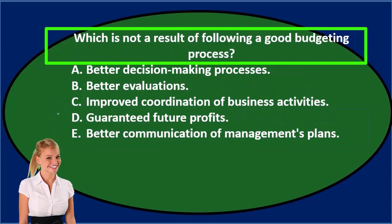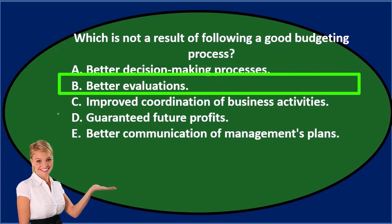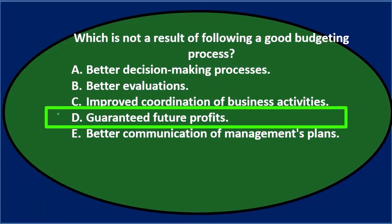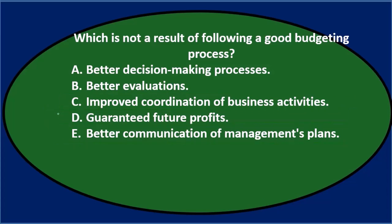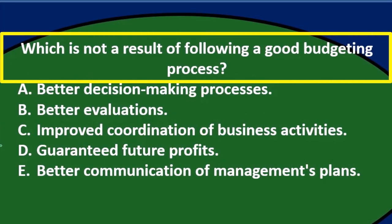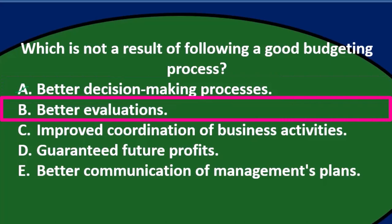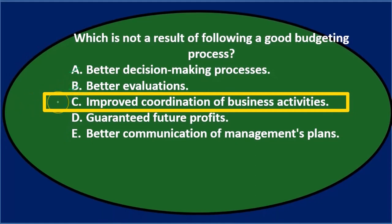Which is not a result of following a good budgeting process? We'll go through this again using the process of elimination. A — better decision making process. We would hope so; that's kind of what we're doing here. B — better evaluations. We're going to be comparing the budget versus the actual, so that would improve our future evaluations.